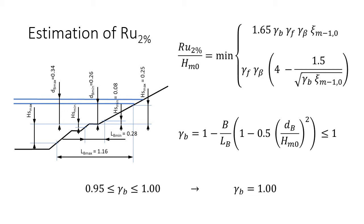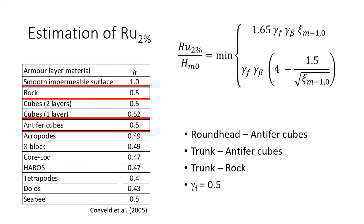Starting with the reduction factor for the influence of the berm, it is not difficult to get to this interval here, which enables us to consider this berm reduction factor as equal to 1. As to the reduction factor due to the armor layer friction, since we have either rock or antifer cubes in the armor layer, the value for this factor is 0.5.